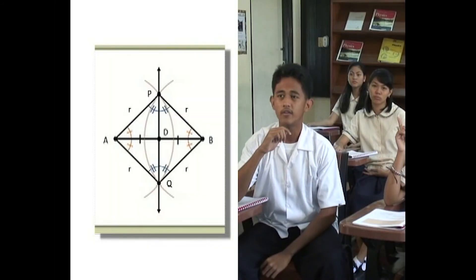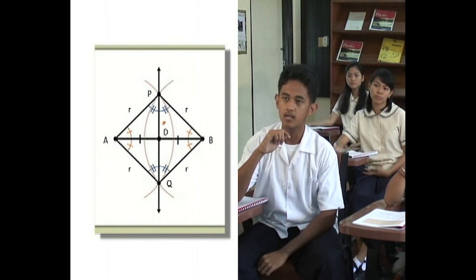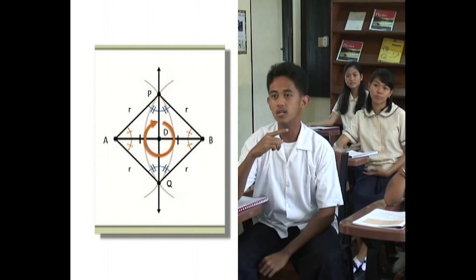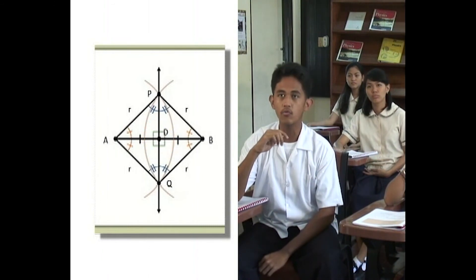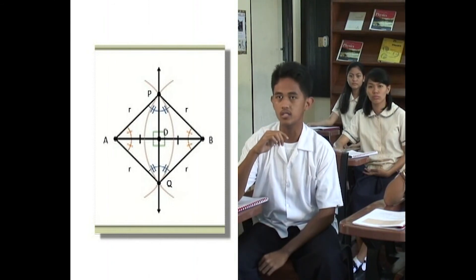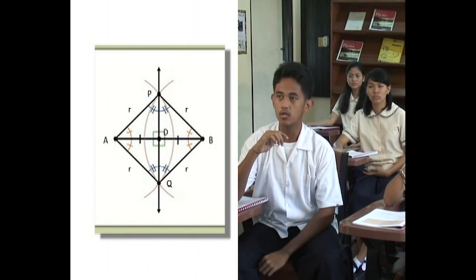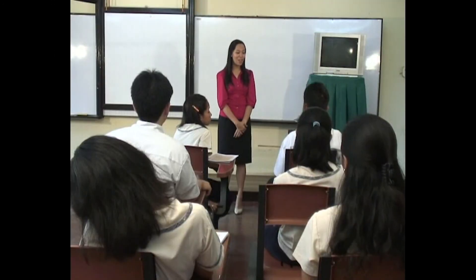I know. The angles around D should sum up to 360 degrees. Now since triangle APD, BPD, AQD, and BQD are all congruent, this makes each angle around D one-fourth of 360. And 360 divided by 4 gives us 90 degrees. So all these angles are right angles. That means PQ is perpendicular to AB. Very good, Domes.